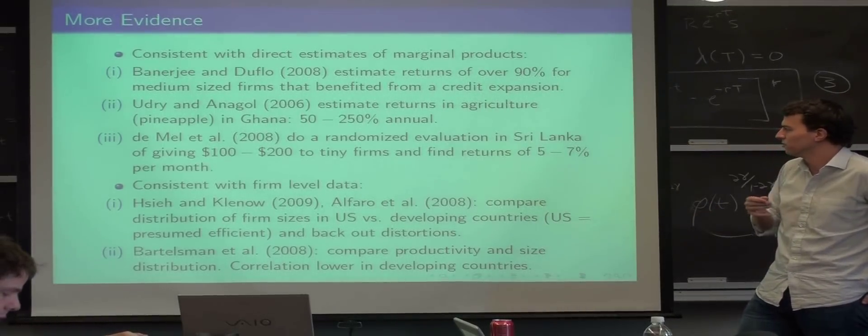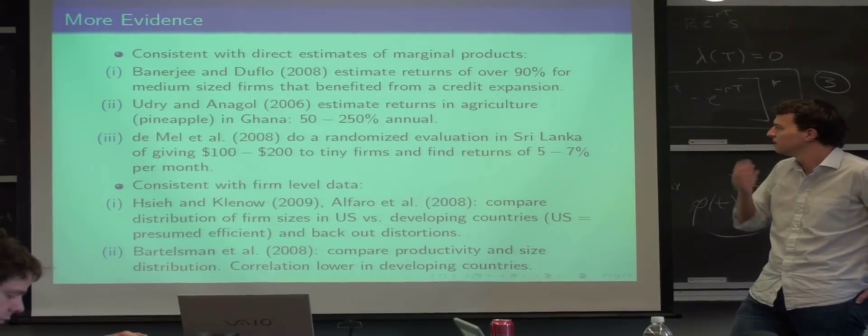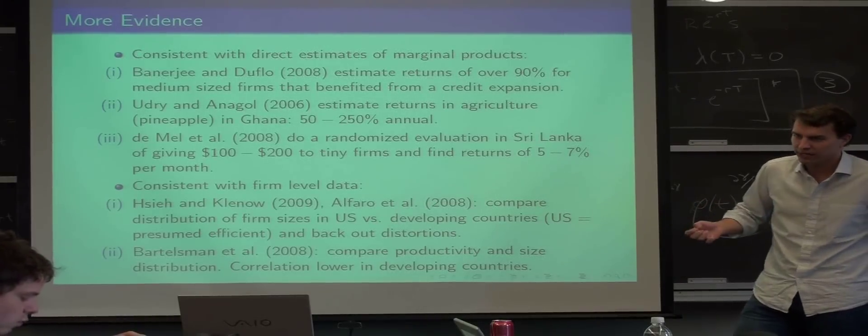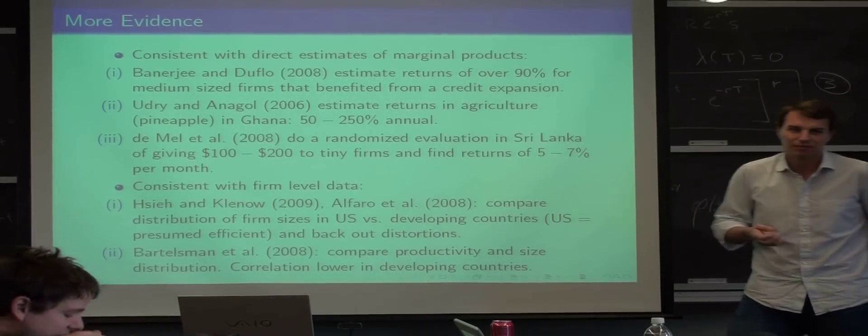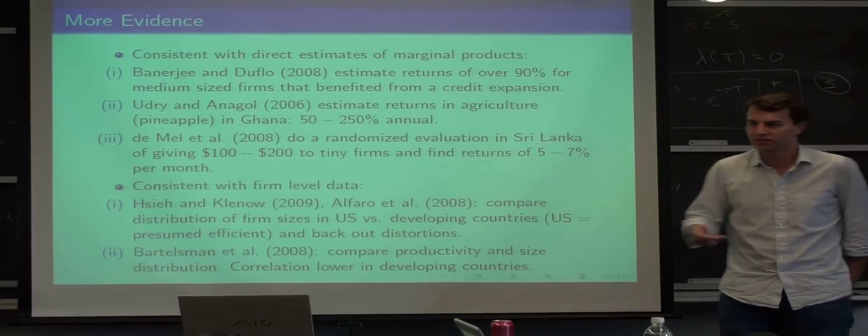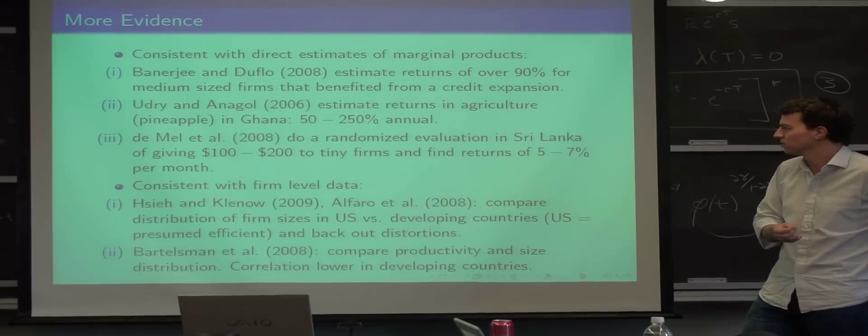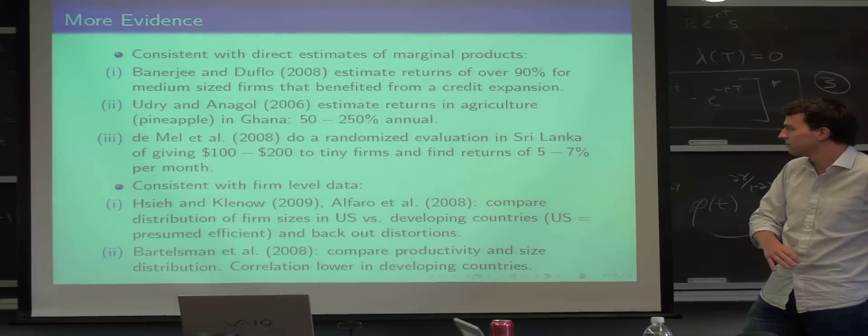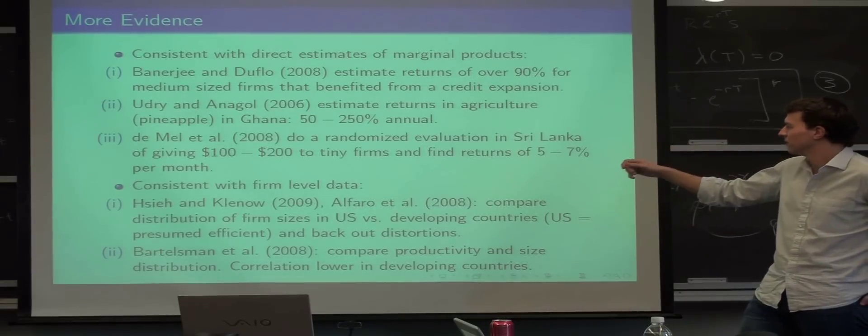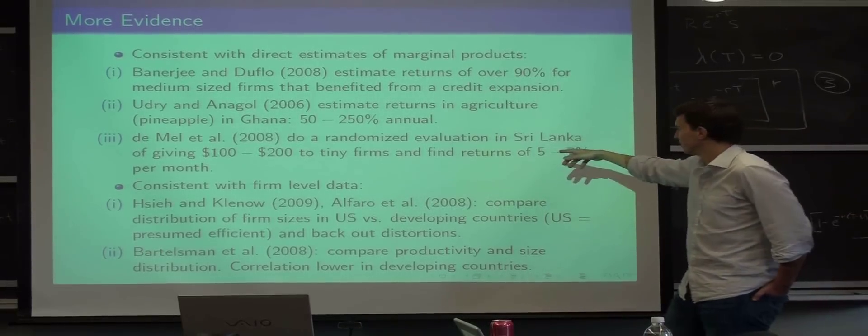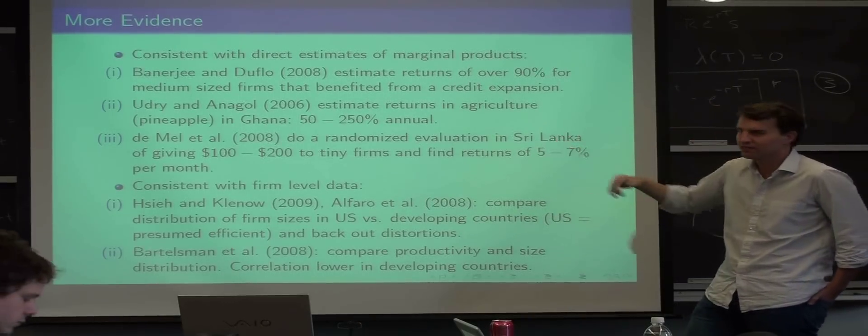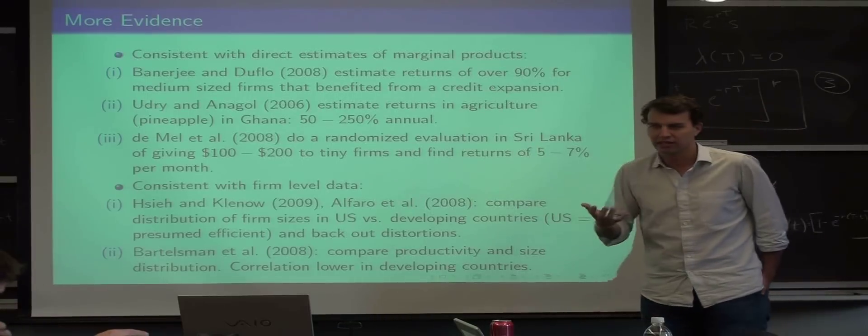So another evidence is this paper by Udry and Anagol. They look at the returns that people get from growing pineapples in Ghana, which is also thought about as returns on capital, because to farm you need like a tractor and so on, so this is also capital. And they also have sometimes huge returns and also a very big dispersion, so 50 to 250 percent. This kind of continues, this is exactly the same, with a randomized trial, which I usually think gets you better identification.